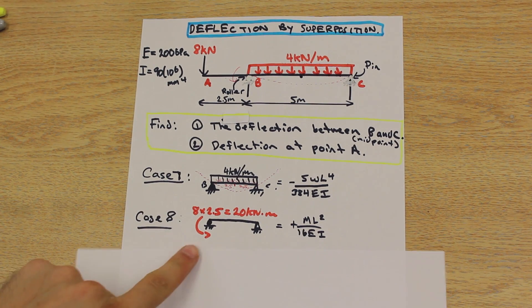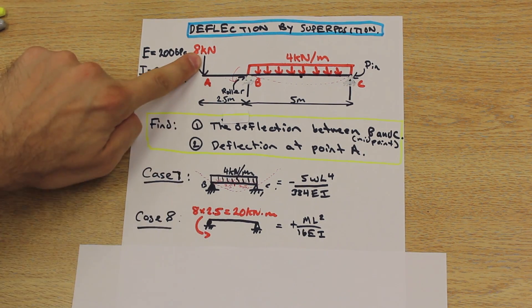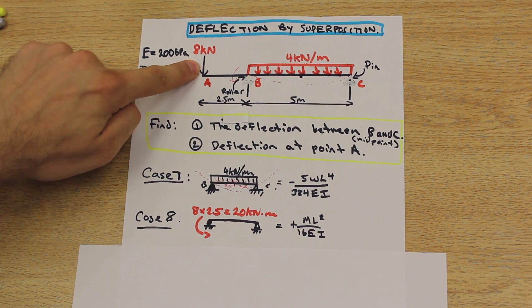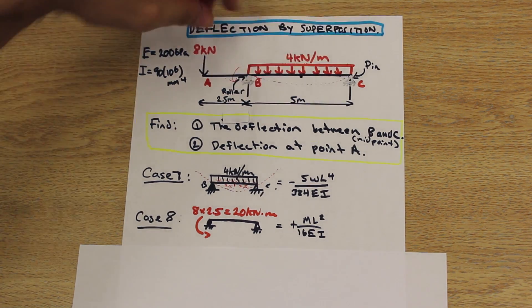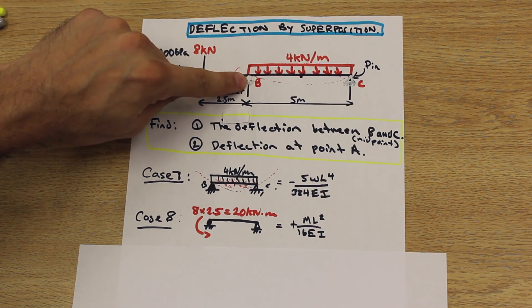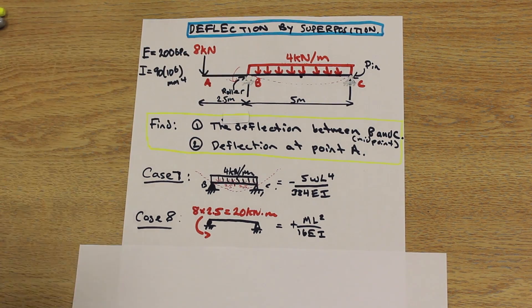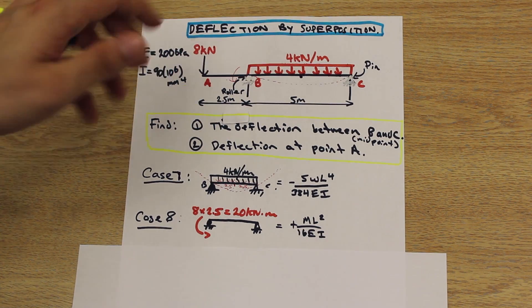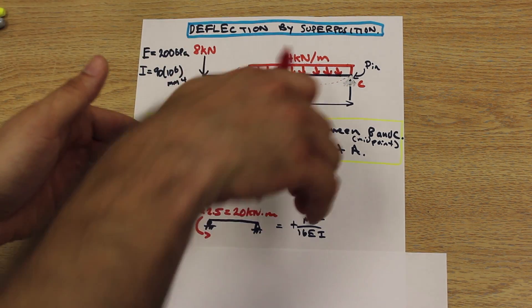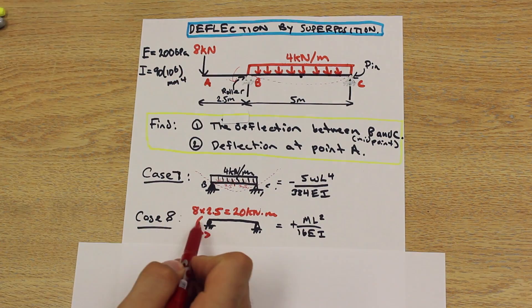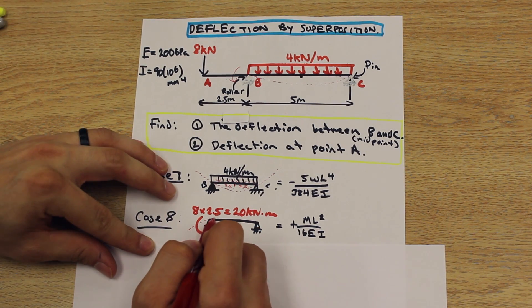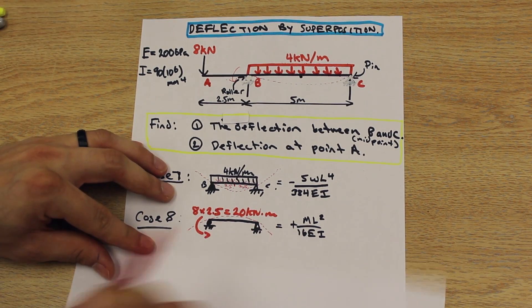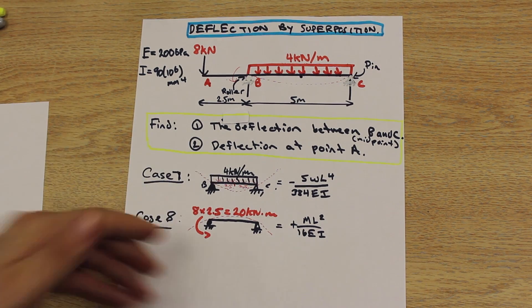Now let's move on to the next case. So this is where it gets a little bit tricky. Case 8, we have a moment. So we have a moment created by this force. So this force, as we can see, isn't directly deflecting the beam here, but this force is creating a moment on the support at B, and that moment is going to cause the beam to deflect in this direction.